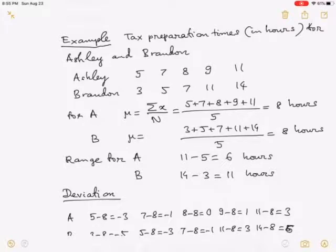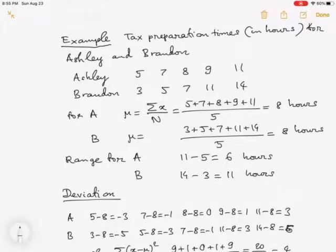Brandon prepared for 3 hours, 5 hours, 7 hours, 11 hours and 14 hours. So first question, find the mean preparation time for each accountant. For Ashley, the mean mu is the sum of x divided by n, which is 5 plus 7 plus 8 plus 9 plus 11 over 5, so we get 8 hours.